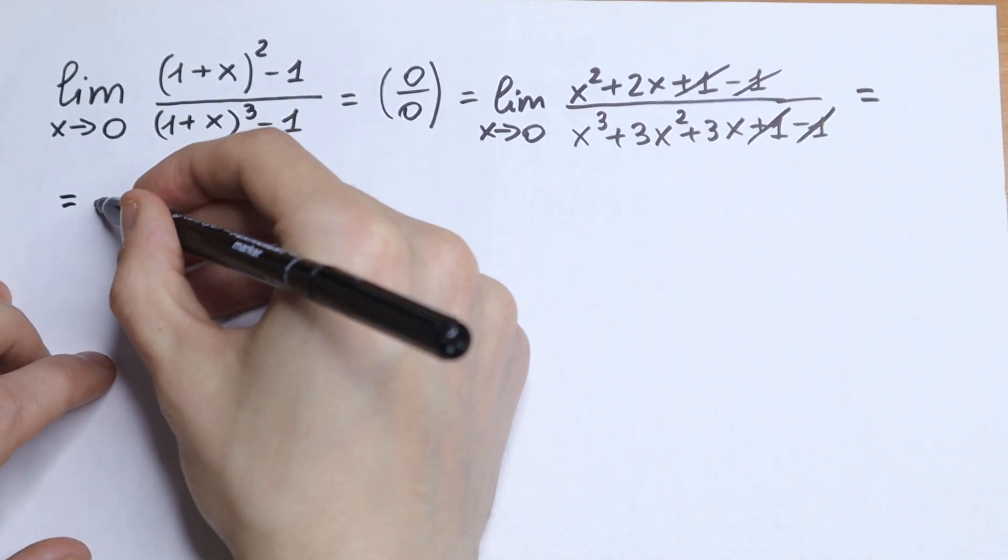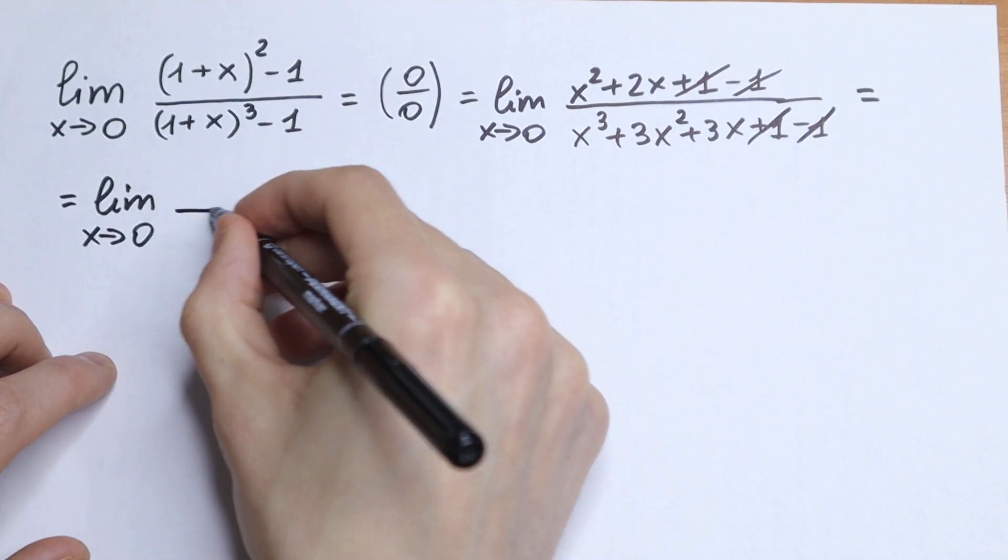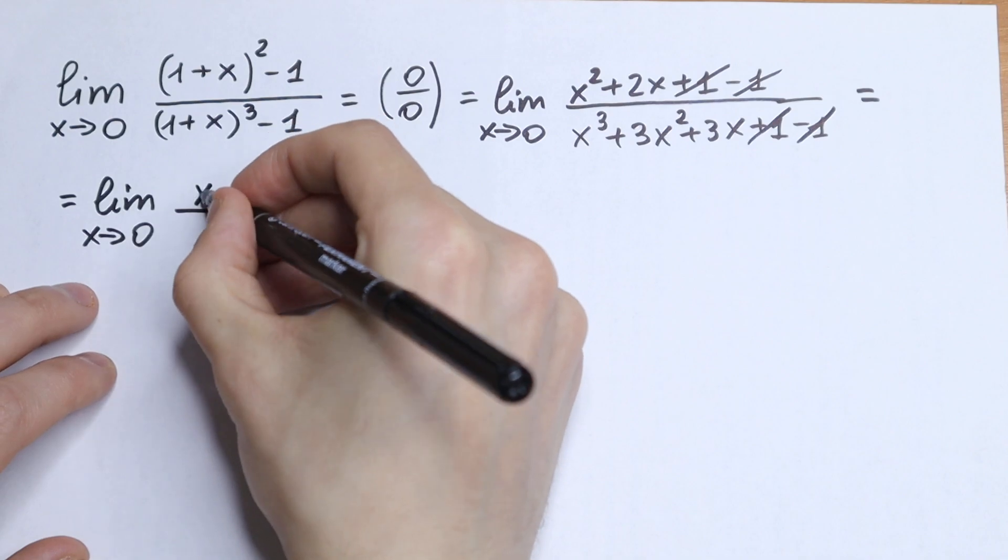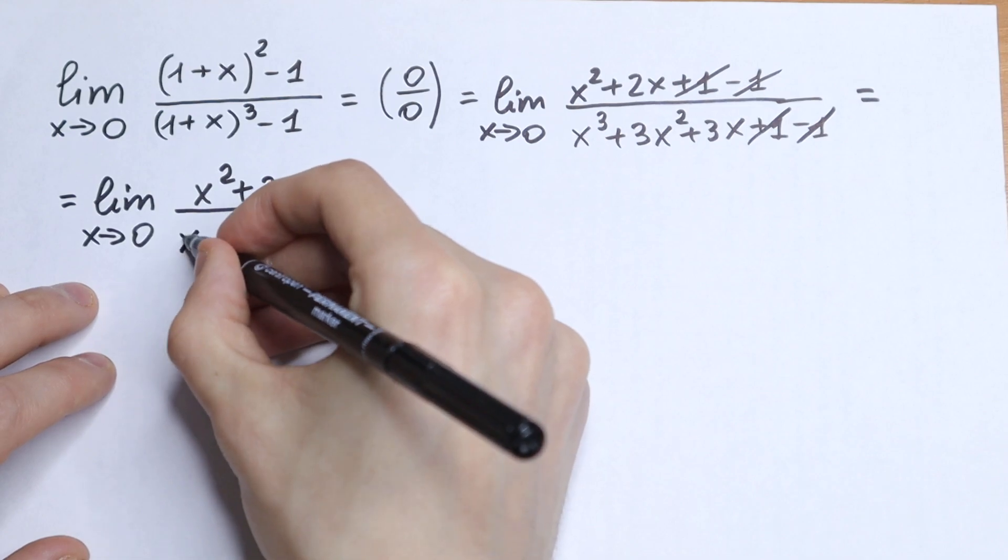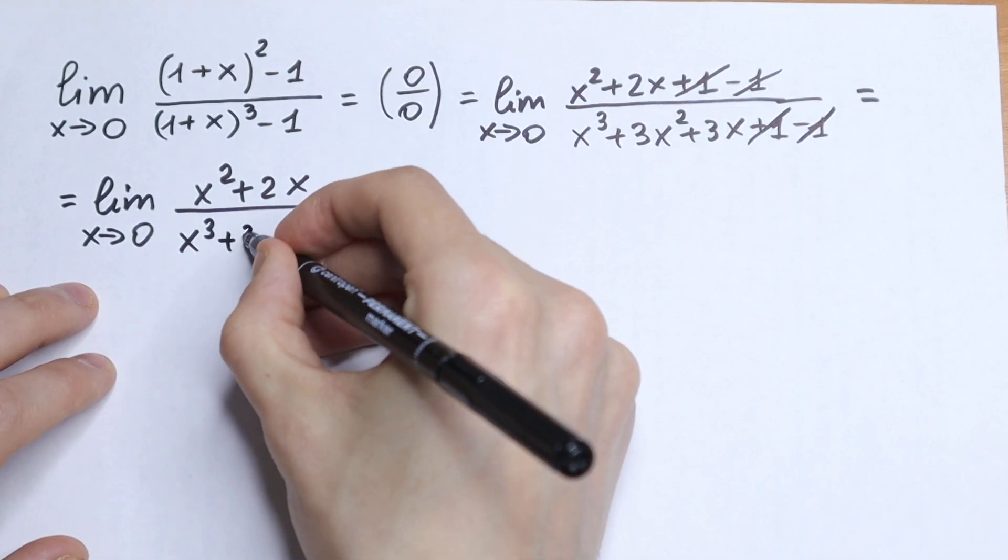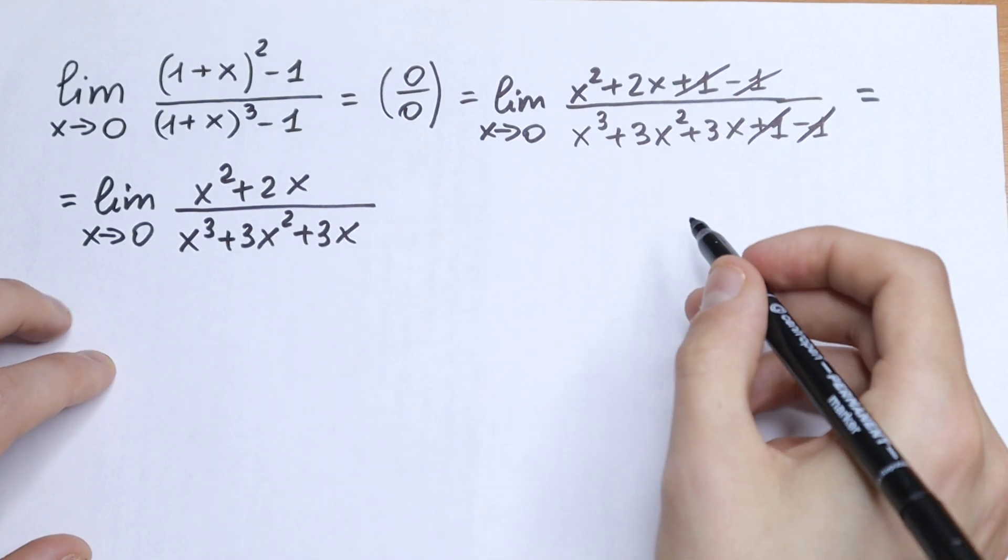So as a result we will have limit as x approaches 0 of the function x² + 2x in our numerator, and in our denominator we will have x³ + 3x² + 3x.